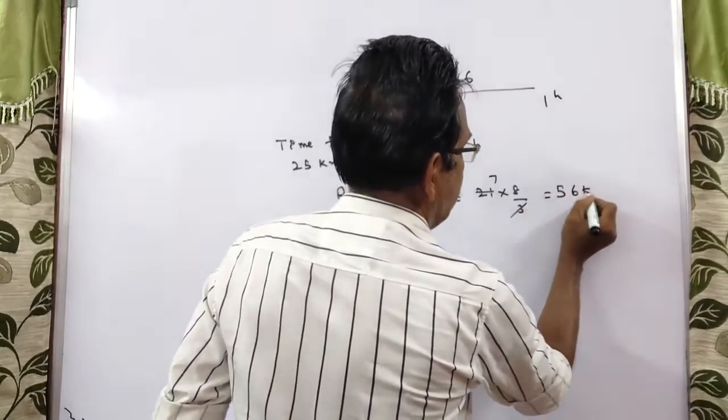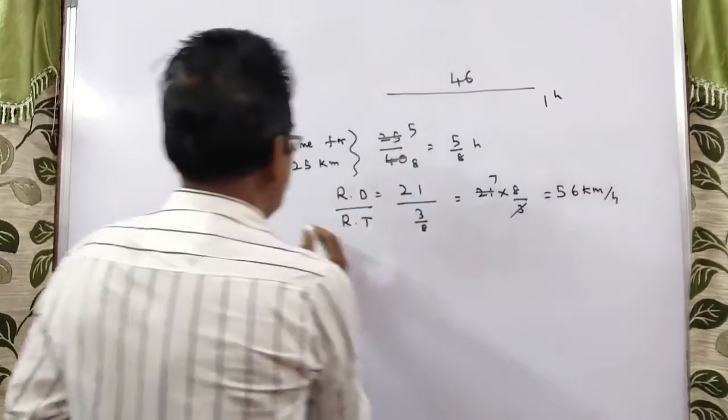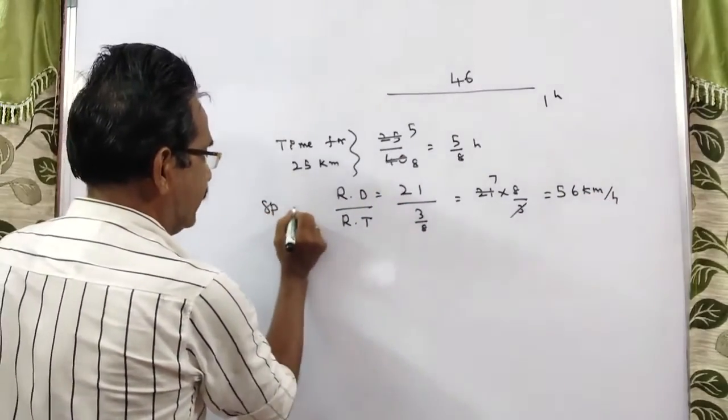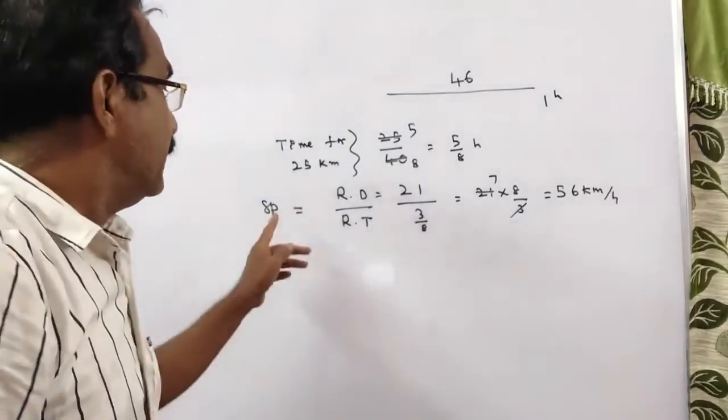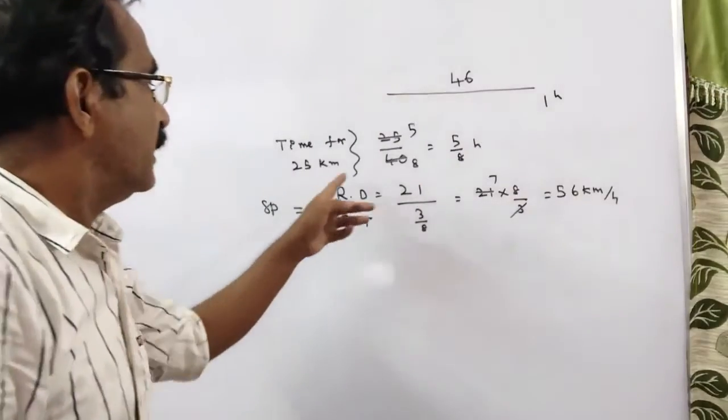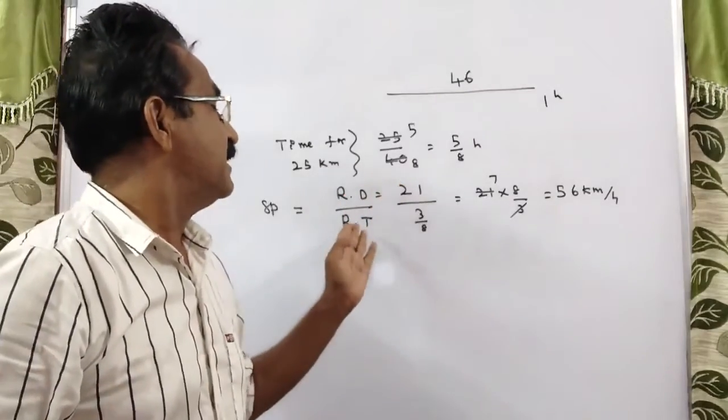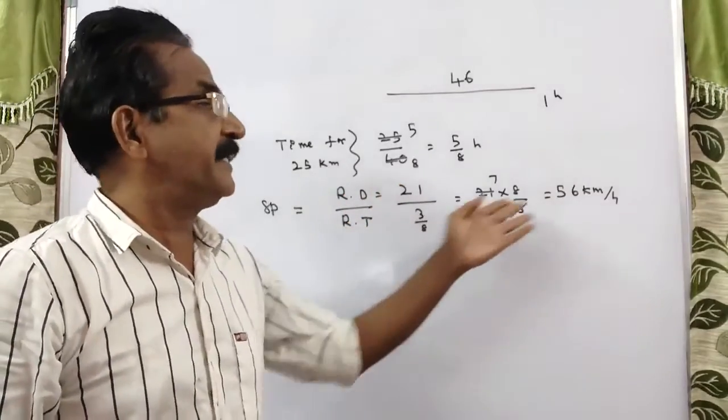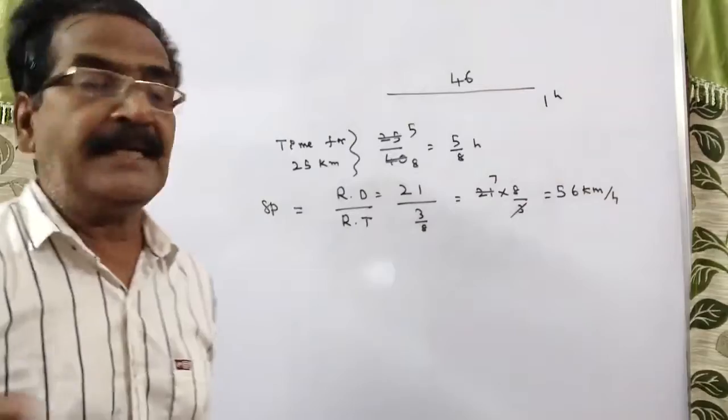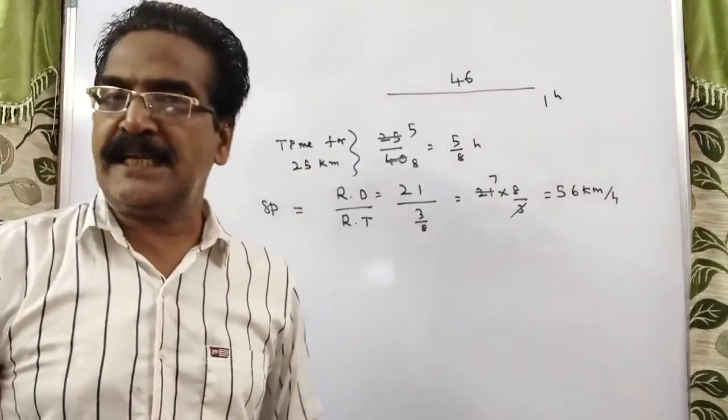So the speed for the remaining journey is equal to remaining distance by remaining time. Remaining distance 21 kilometers, remaining time 3 by 8. So the second speed must be 56 kmph.